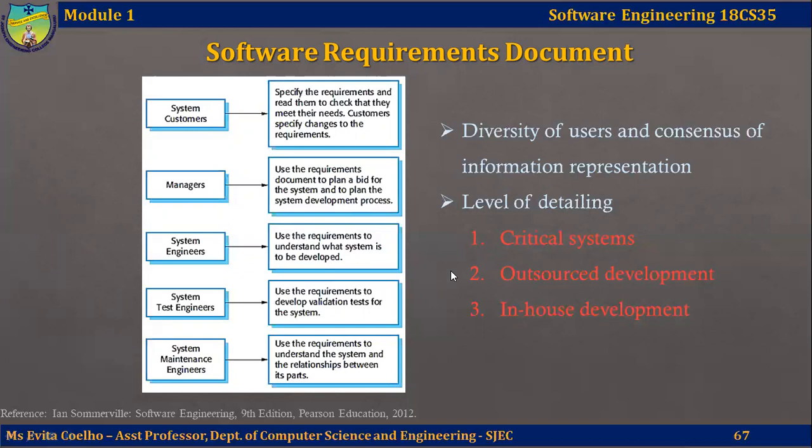Information on anticipated changes can help system designers avoid restrictive design decisions and help system maintenance engineers adapt the system to new requirements. The level of detail you should include in a requirements document also depends on the type of system being developed and the development process used. Critical systems need detailed requirements because safety and security have to be analyzed in detail. When the system is developed by a separate company through outsourcing, the system specification needs to be detailed and precise. If an in-house iterative development process is used, the requirements document can be much less detailed and any ambiguity can be resolved during development.